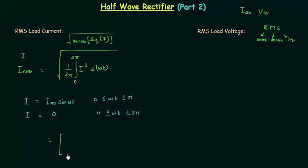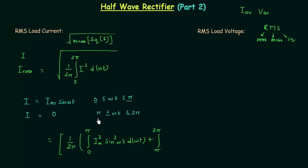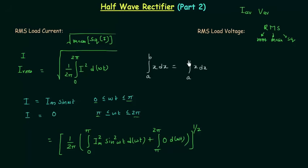Using the piecewise condition, we have 1 over 2π times the integral from 0 to π of I_M² sin²(ωt) dωt, plus the integral from π to 2π of 0 dωt, all raised to the power of 1/2. I have used the property of the definite integral: integrating from a to b equals integration from a to c plus integration from c to b.